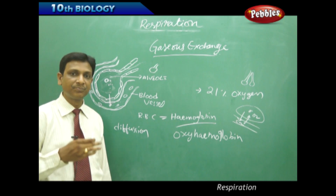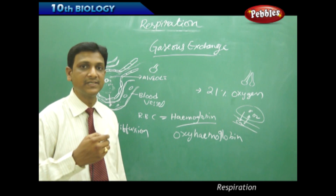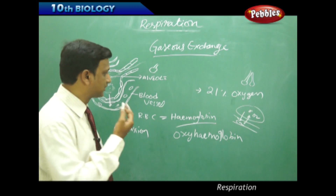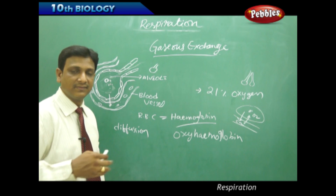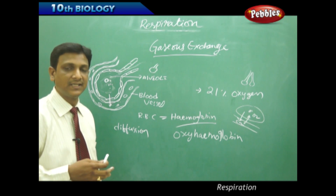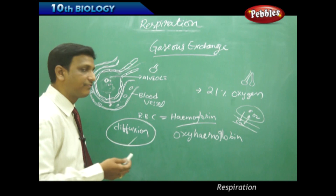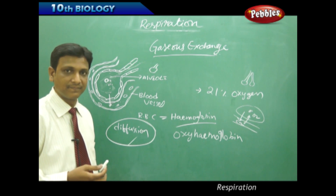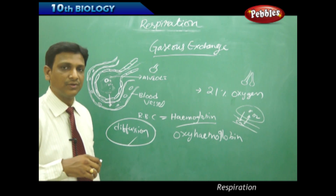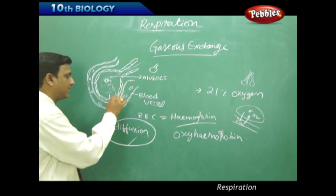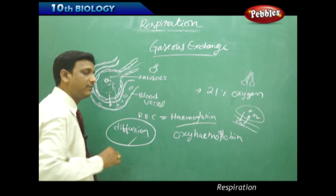This release and absorption takes place by a process called diffusion, which we studied in the lesson on cell membrane in 9th grade. There is a very thin membrane — one cell thick — through which gases, oxygen and carbon dioxide, are transported by diffusion. The exchange of gases takes place due to differences in concentration: gases always diffuse from higher concentration to lower concentration. Since blood has less oxygen, oxygen from the alveoli diffuses into the blood. Since CO2 concentration is higher in the blood than in the alveoli, CO2 goes back to the alveoli.